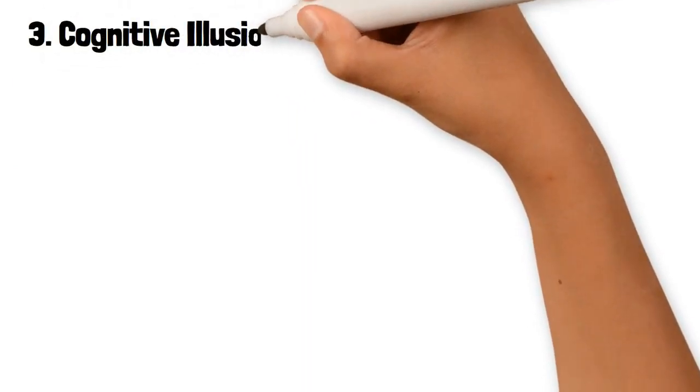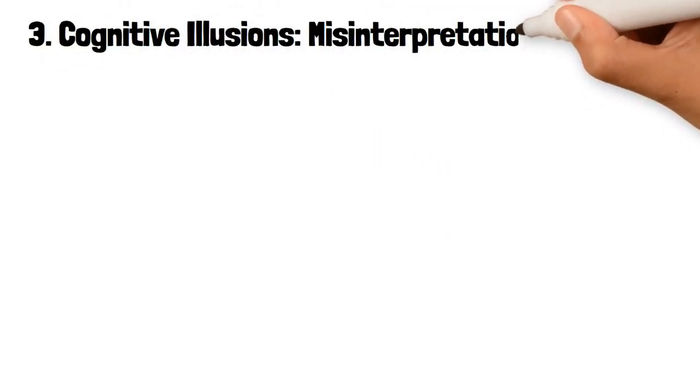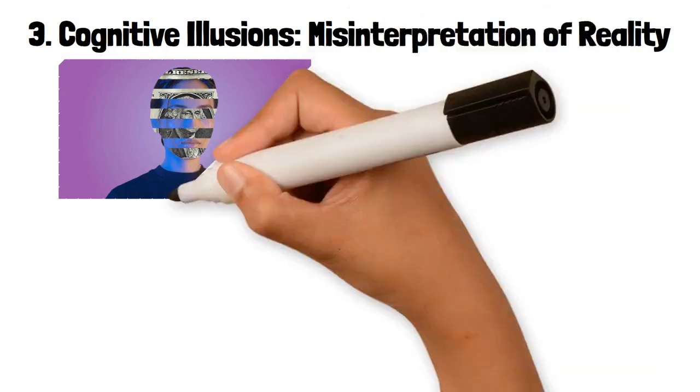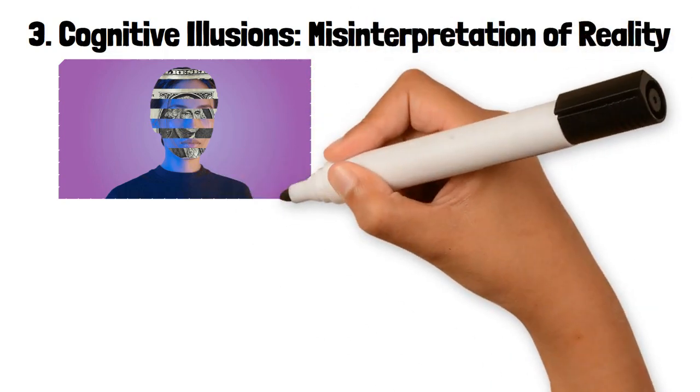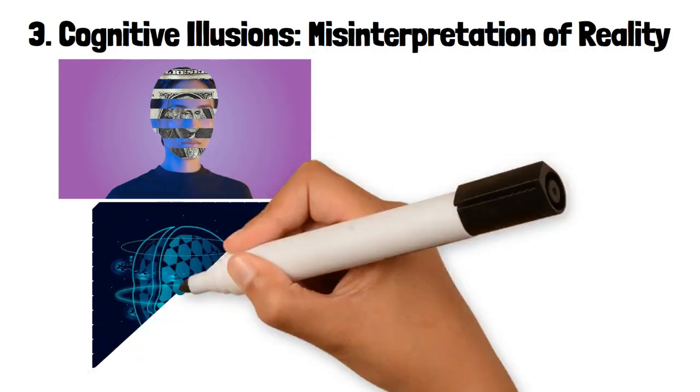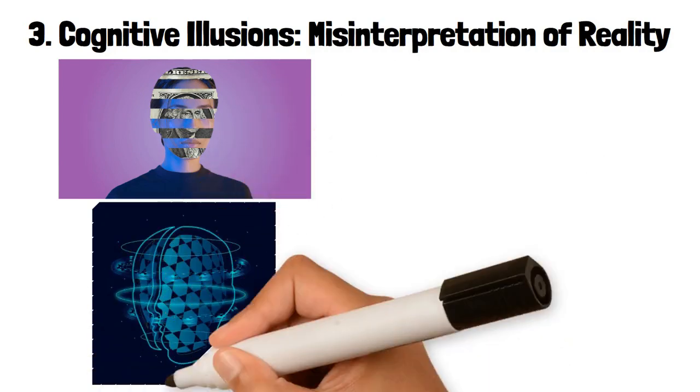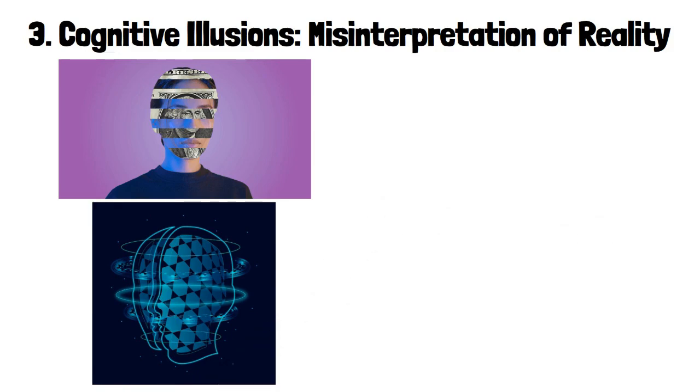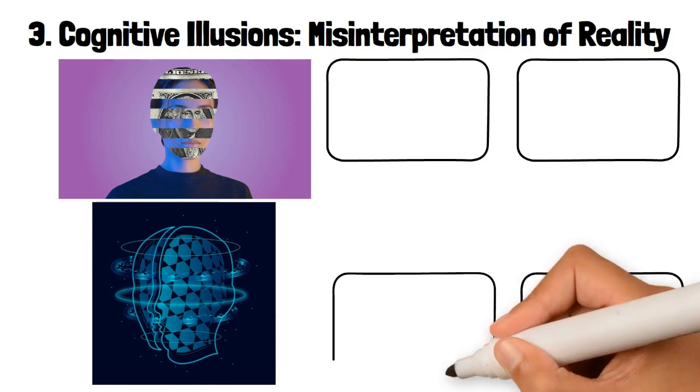3. Cognitive Illusions: Misinterpretation of Reality. Cognitive illusions are the most complex type of optical illusion, involving a higher level of cognitive processing. These illusions occur when the brain makes assumptions or uses context to fill in gaps in visual information, leading to a perception that doesn't match reality. Cognitive illusions can be broken down into several subtypes.